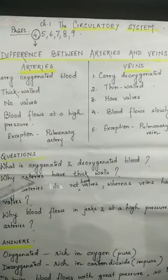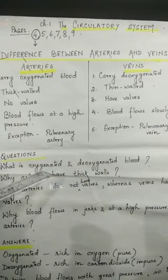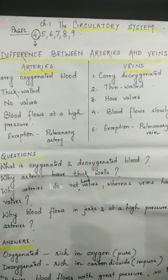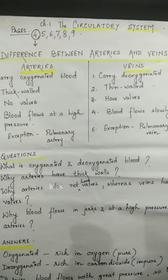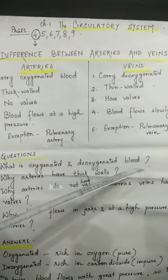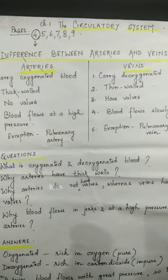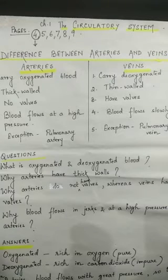Now let us come to some questions. What is oxygenated blood? Oxygenated blood means blood which is rich in oxygen, or we can say pure blood. What is deoxygenated blood? Deoxygenated blood means blood which has more carbon dioxide, or we say it is impure blood.